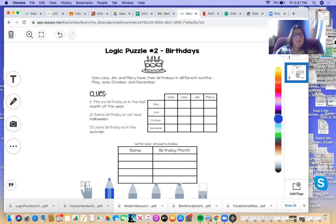Our instructions say Sam, Lisa, Jim, and Mary have their birthdays in different months: May, June, October, and December. All right.